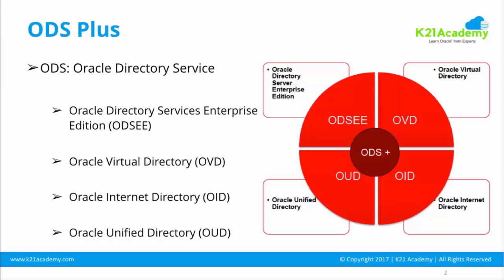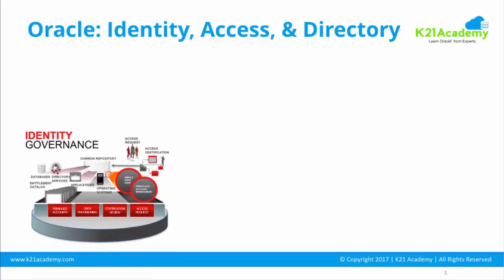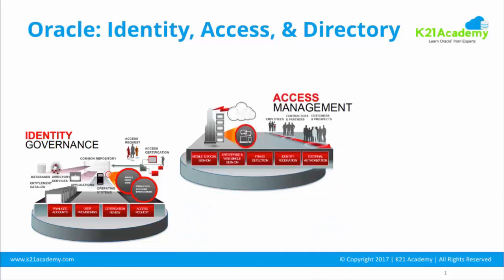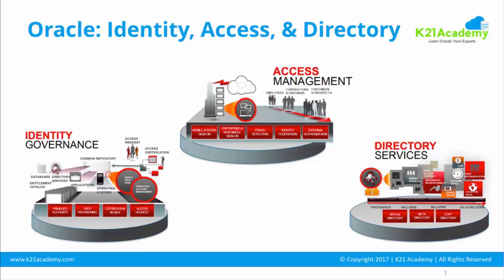Before diving in, let's go a level above. Oracle has a rich set of products in its Identity and Access Management suite, with three main categories: Identity Governance, Access Management, and Directory Services. Oracle Internet Directory, Oracle Unified Directory, Oracle Virtual Directory, and Oracle Directory Service Enterprise Edition are all part of that third category — Directory Services.